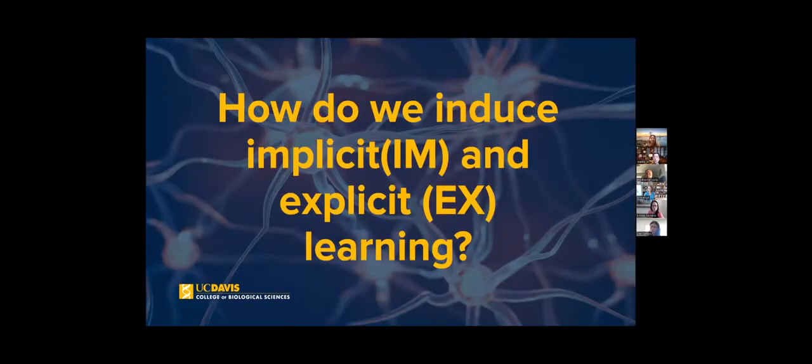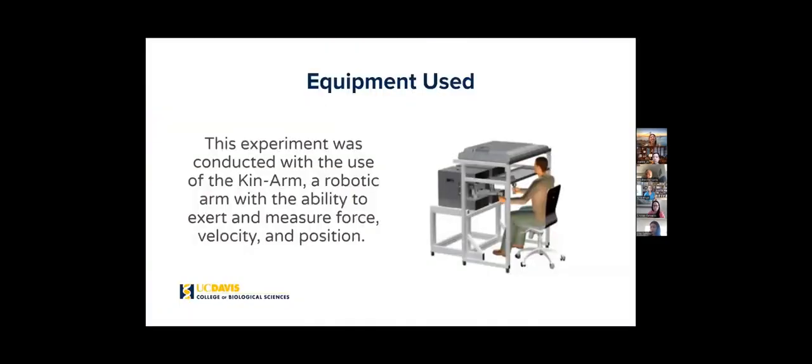How do we induce implicit and explicit learning? We do this by using a machine called the Kinarm. This machine is a robotic arm with the ability to exert and measure force, velocity, and position.